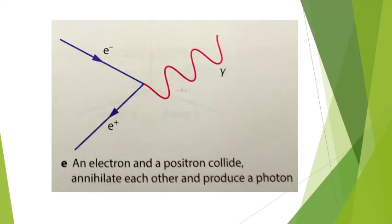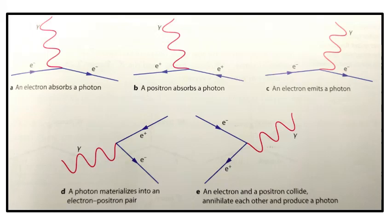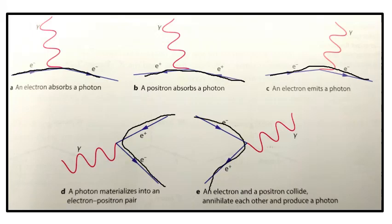If an electron and positron collide together, they annihilate each other and a photon is produced. In all of these pictures, notice what happens with the arrows — the arrows are continuing in each case, with the photon out there. These are actually the exact same picture if you rotate them. This shows that maybe it's just the same particle going backwards and forwards in time, which helps with the intuition.